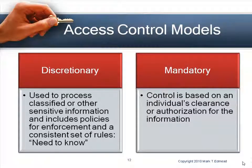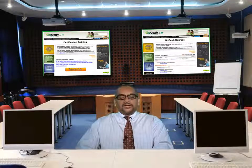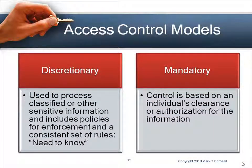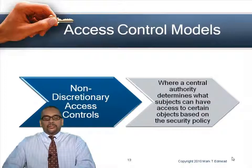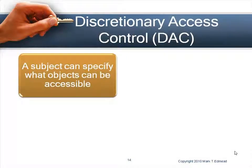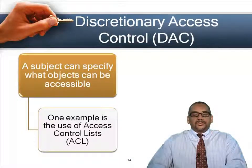Mandatory access control is where control is based on clearance level, used extensively in government agencies. A third-party policy controls access based on whether the person has a top secret or secret clearance. Non-discretionary access controls are similar — a central authority defines what subjects have access to what objects. Discretionary access control (DAC) allows a subject to specify what objects can be accessible, primarily through access control lists.